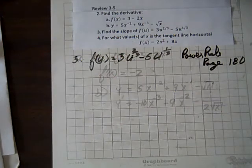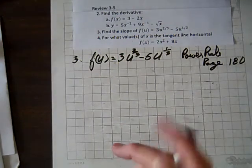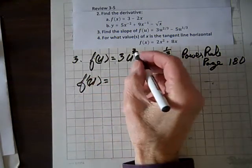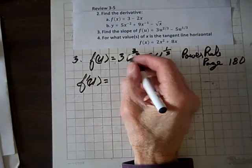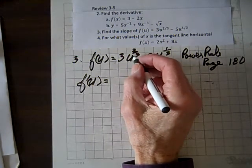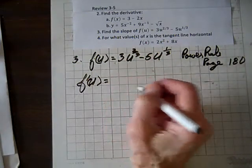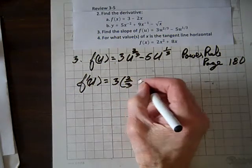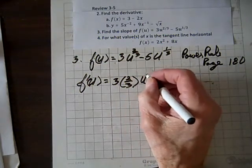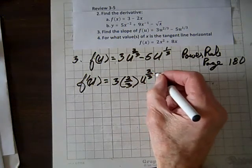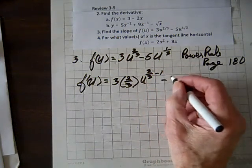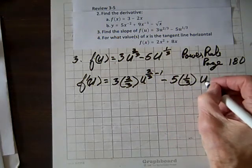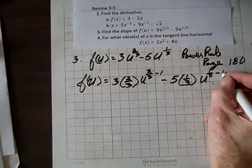And we're done with two. So now we're doing question three. So f prime of u equals, and when we multiply, we bring the two-thirds down, multiply two-thirds times three. In fact, let's do this the long way, three times two-thirds u to the two-thirds minus one minus five times one-third to the u to the one-third minus one.